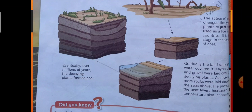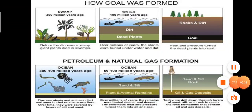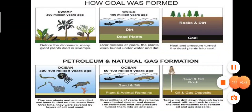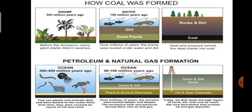The pressure and temperature of the layers of mud and stone on the dead bodies of plants and animals increased. As you can see on the screen, plants died in swamps, and over millions of years the plants were buried under water. Rock and dead material formed a layer on the buried plants, and the high temperature and pressure changed the dead bodies of plants and animals into coal.